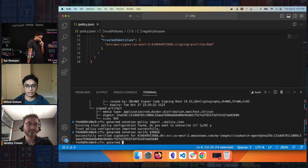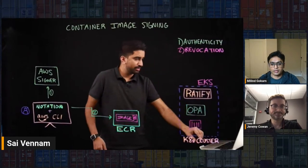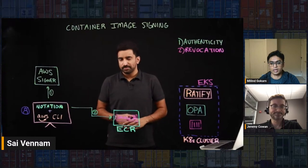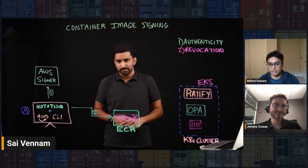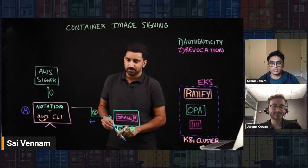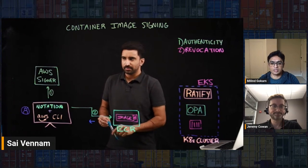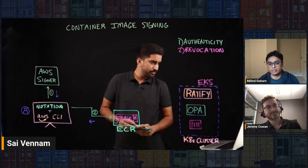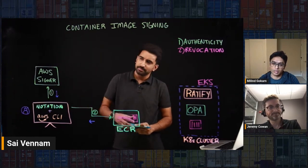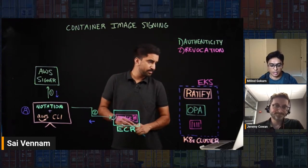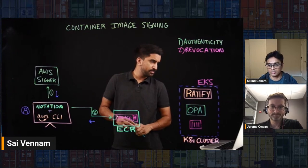Let's walk through what happens during verification. We configured Notation with a trust policy and ran notation verify with the image reference. Notation talks to ECR and says 'give me all the signatures associated with this image,' pulls all the signatures, and starts verifying them. It checks whether those signatures were generated by the identity — 'Bob' in this case — plus it calls AWS Signer to do a revocation check via the revocation check API. So you get signature verification including revocation check, and once all checks pass, it says the signature is good and you can deploy that image.